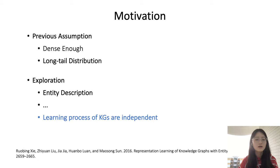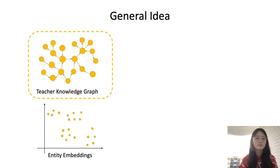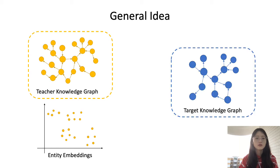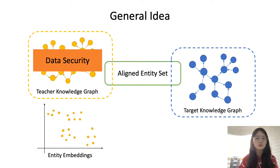We also observed that the learning processes of knowledge graphs are independent. So we considered using the learned features in other knowledge graphs to help with the target knowledge graph. In this setting, we have a knowledge graph with its learned entity embeddings — we call it the teacher — and another knowledge graph to be learned, denoted as the target. We can construct an aligned entity set by entity linking, string matching, or other methods, and transfer features from the teacher to the target. Considering data security, we use only the entity embeddings and not the original triplet data, because we can hardly recover the original data from entity embeddings without the relationship information.